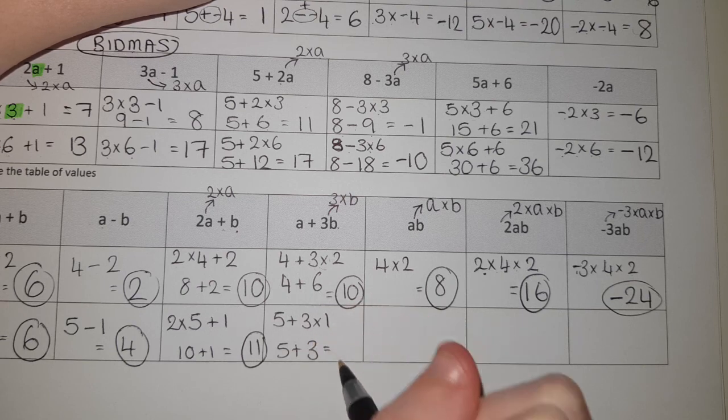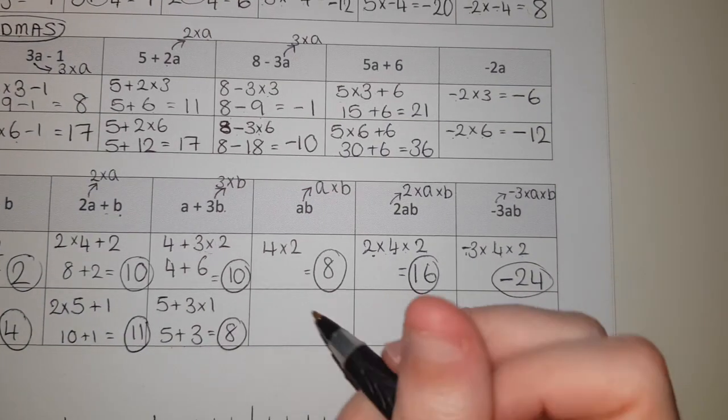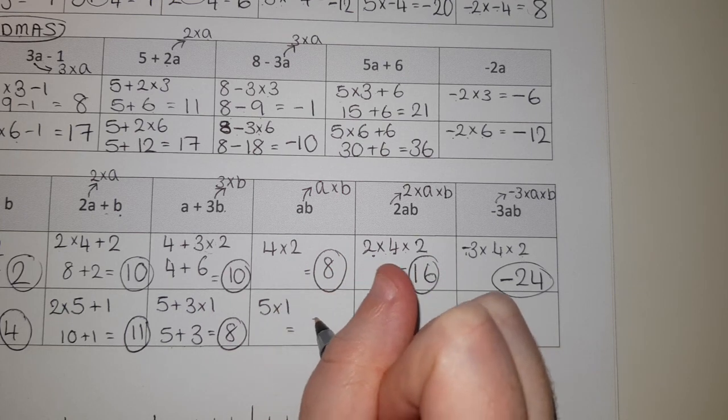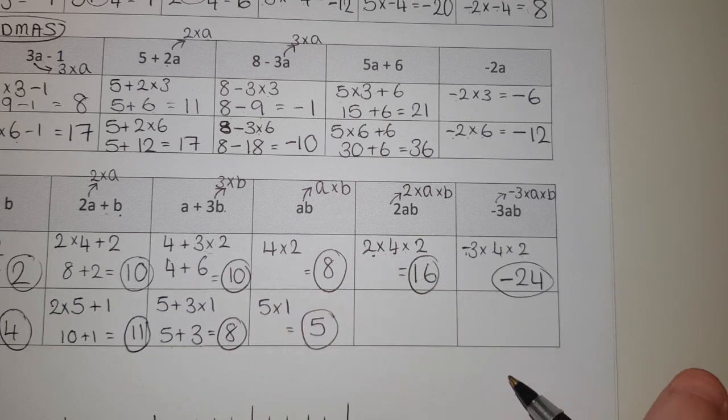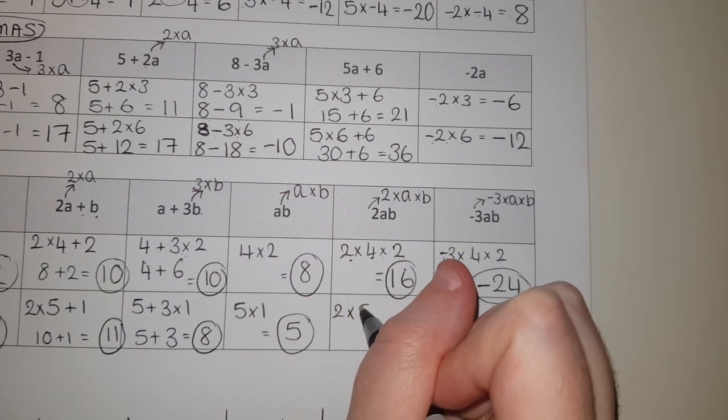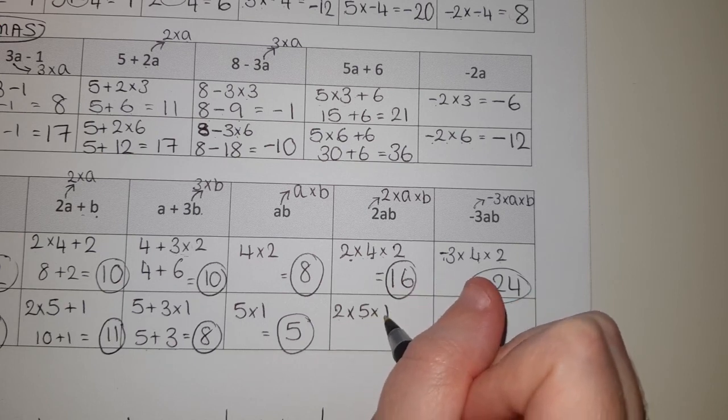Last few examples. AB - well, A is five, B is one - so five times one gives me five. That's that one done. Next one, 2AB - well that's two times five times one. So two times five is ten, times one is just ten.